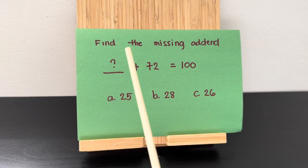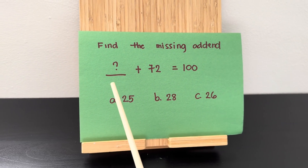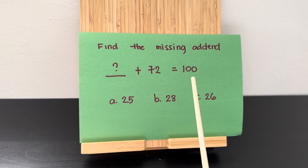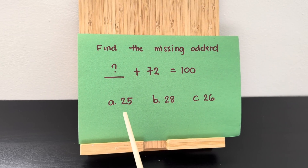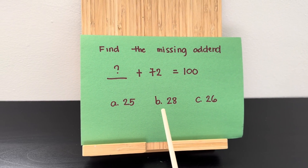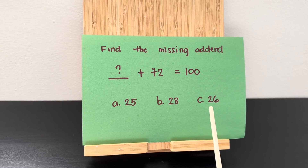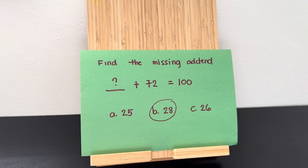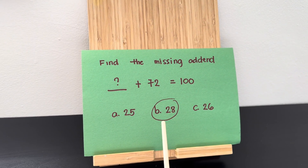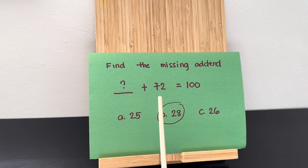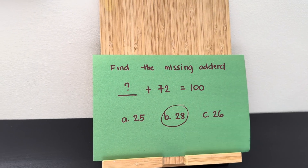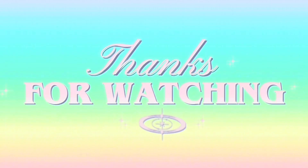Now, let's find the missing addend. Blank plus 72 is equals to 100. Is it letter A, 25? B, 28? Or letter C, 26? And the correct answer is letter B, 28. 28 plus 72 is equals to 100. Thank you for watching.